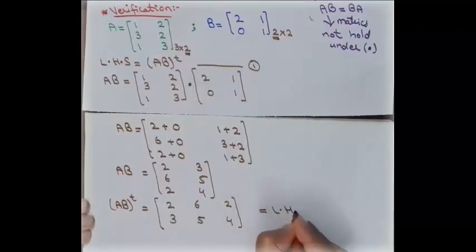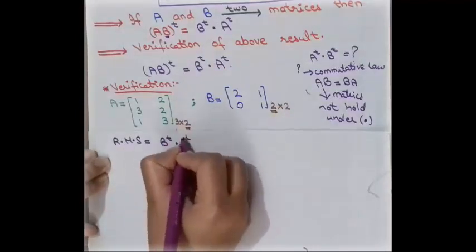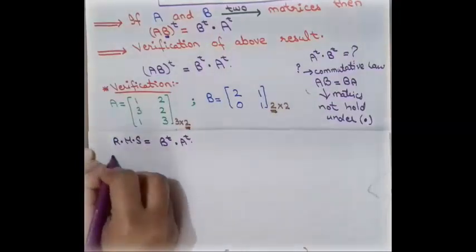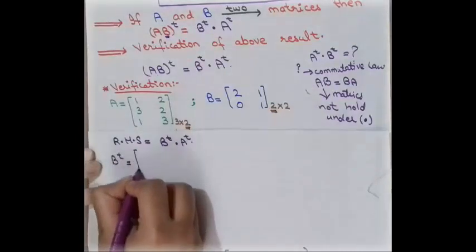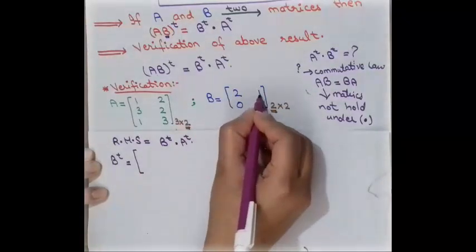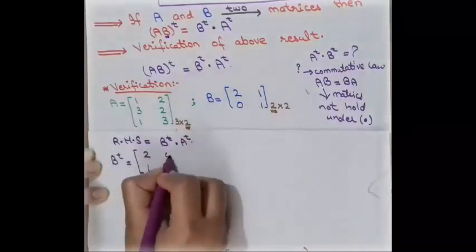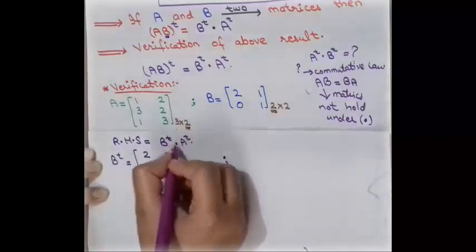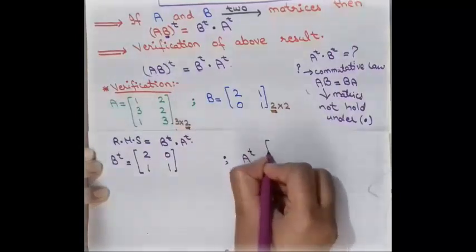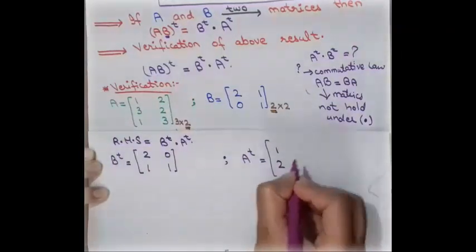For the right-hand side, we compute Bᵀ multiplied by Aᵀ. First, we find the transpose of matrix B by swapping rows into columns: the row [2,1] becomes a column and [0,1] becomes a second column, giving Bᵀ = [[2,0],[1,1]]. Then we find the transpose of matrix A: the first row of A becomes the first column of Aᵀ, giving Aᵀ = [[1,3,1],[2,2,3]].